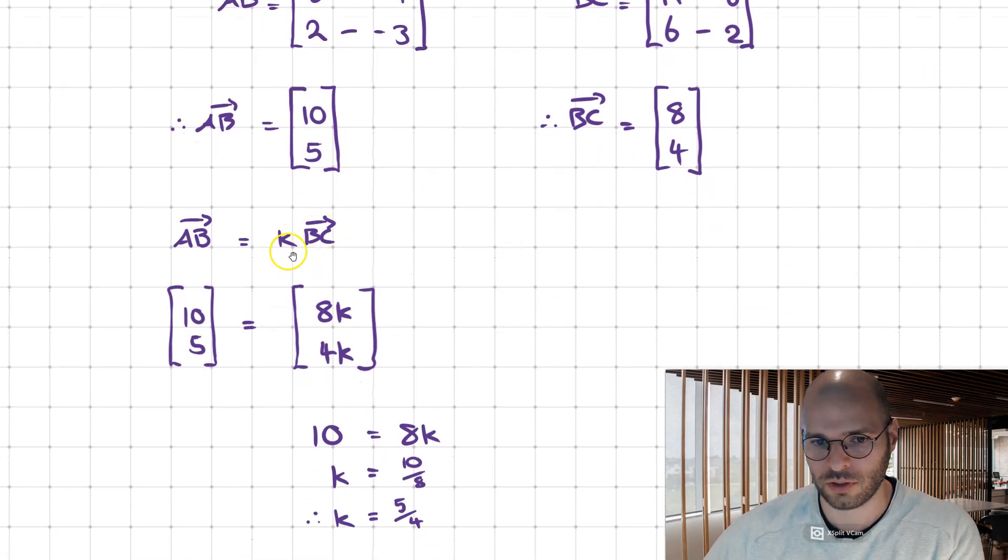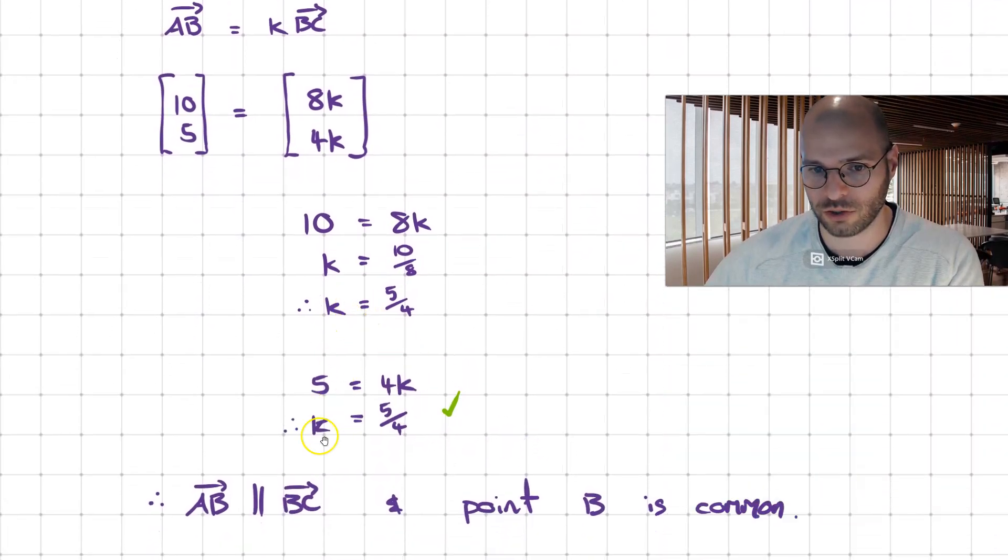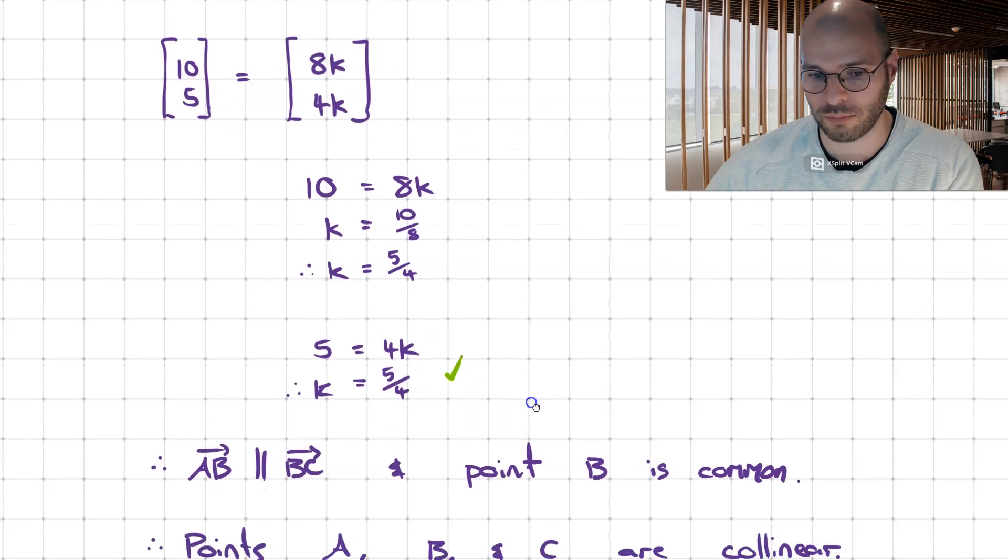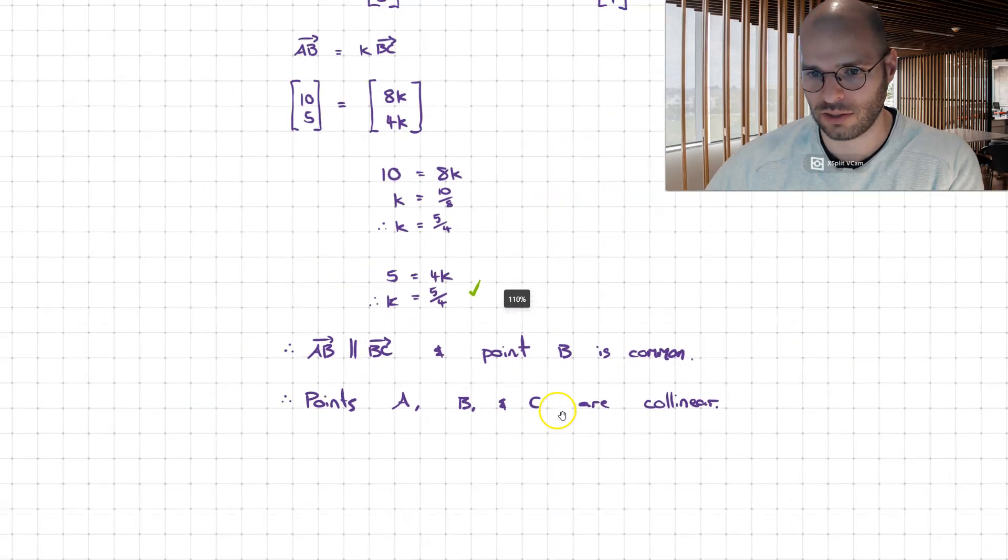We put them through the parallel relationship test. We deduce that they pass the test because the value of k turns out true for both of them. Therefore, we find that vectors AB and BC are parallel and they share a common point B. Therefore, points A, B and C are all collinear.